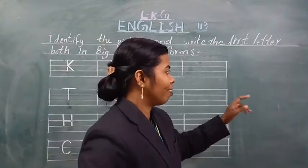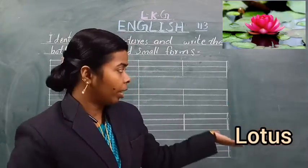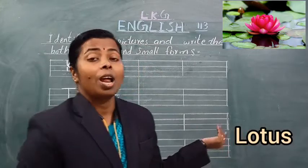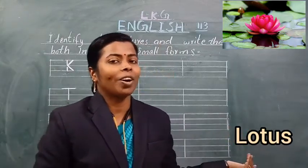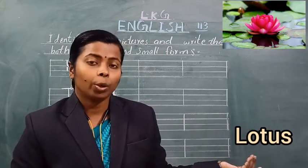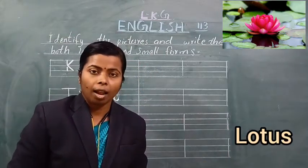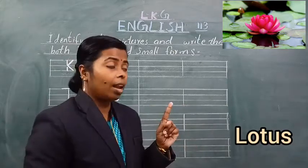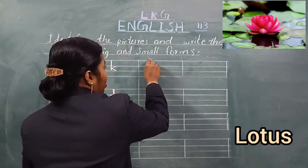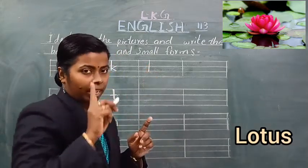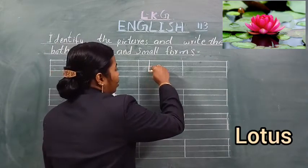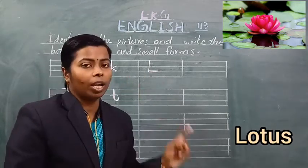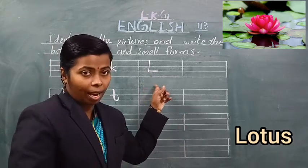See the next picture. What is this? This is a flower — a lotus. Yeh ek fool hai. Spell the word lotus: L-O-T-U-S. Lotus. First letter L hai. L kaise likhna hai? First line se lekar third line tak standing line, phir third line mein sleeping line. This is capital letter L. Yeh capital letter L hai.